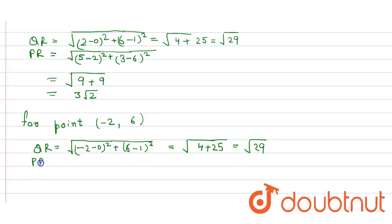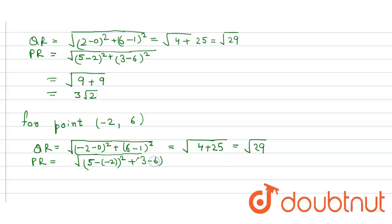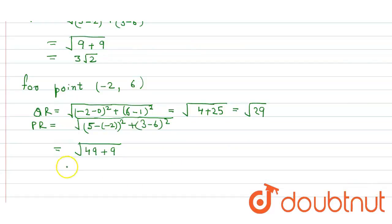For PR with point (-2, 6): PR = √[(5 - (-2))² + (3 - 6)²] = √[49 + 9] = √58. So the distance is equal to √58, and that's our answer.